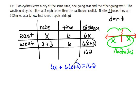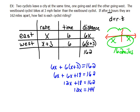Now let's continue solving. We have 6x plus, doing the distribution, 6x plus 18 equals 162. Combining like terms we get 12x plus 18 equals 162. Subtracting 18 from both sides we get 12x equals 144. Dividing both sides by 12 we get x equals 12.